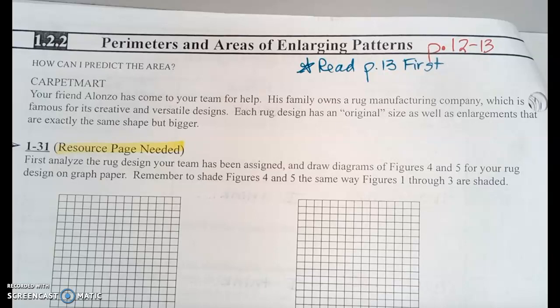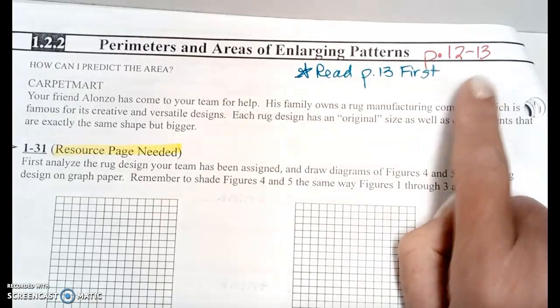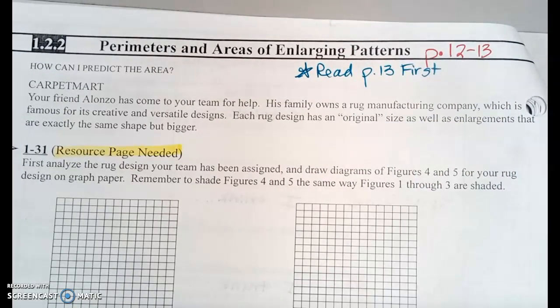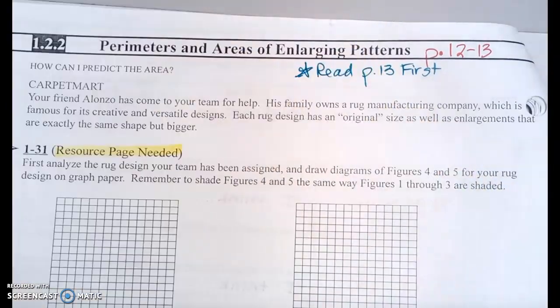Section 1.22 is titled perimeters and areas of enlarging patterns. We're going to be completing pages 12 and 13, and we're going to answer the question, how can I predict the area? We are going to read page 13 first, and then we're going to come back and use this little yellow slip of paper to complete your carpet mart activity.